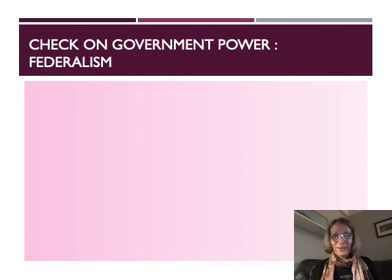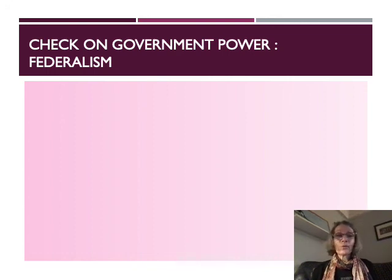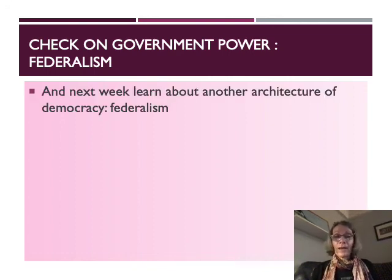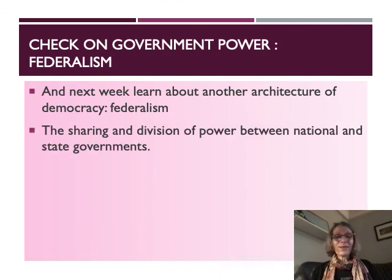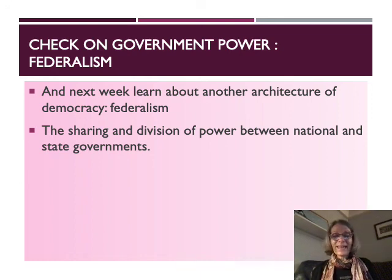There's one more feature of the architecture of democracy — another mechanism the framers put in place to prevent abuse of power — and we're going to be talking about that next week: federalism. Federalism is the division of power between the national and state governments. Thanks for listening, and I will talk to you again soon.